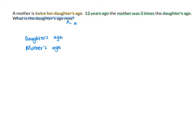The information here compares their ages at two different stages in their life. The first stage is now. And now, if I've got the mother being twice the daughter's age, I think it's going to be easiest to make the daughter x, because that's what I'm looking for, which means the mother will be two times x.